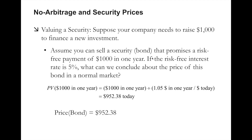No Arbitrage and Security Prices. On this slide, we are going through an example of a firm trying to raise additional funding. Say your company needs to raise $1,000 to finance a new investment. As we will go through in week 6, when a company tries to borrow money from the market, they often do that through selling something called a bond to investors. The investors will pay a certain amount of money to the company today.